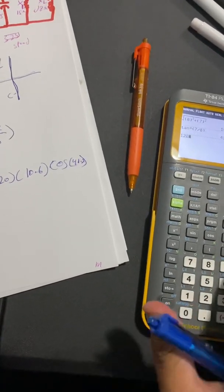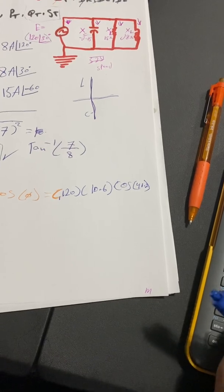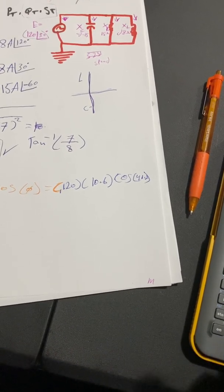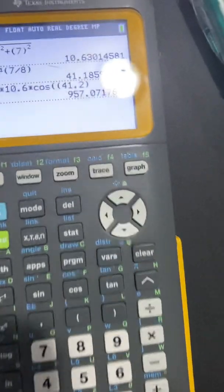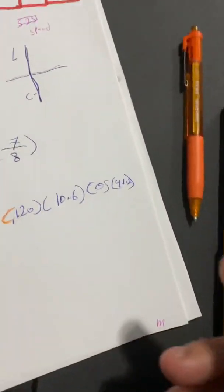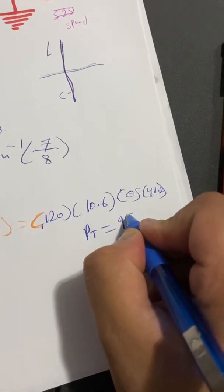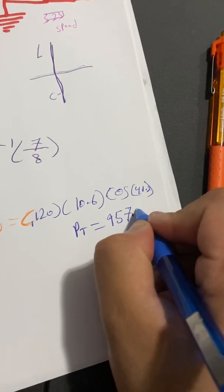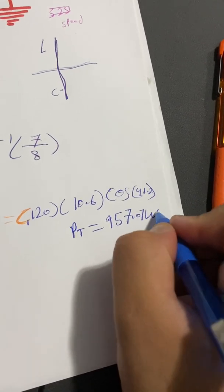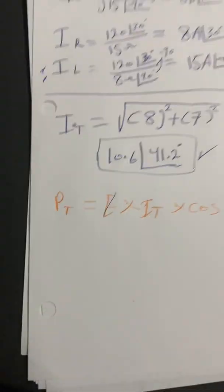The result is 957.7 watts. So the power total equals 957.7 watts. The unit of power is always watts.